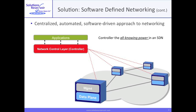The control network can be a physically separate network — something relatively easy to do in a data center, but less so across a WAN. In an open SDN, the protocol for conveying information between the controller and network elements is OpenFlow, which is steered by the Open Networking Foundation, and network elements adhering to this standard are called OpenFlow-enabled. This standardization underlies the SDN goal of commoditized and competitive network elements.